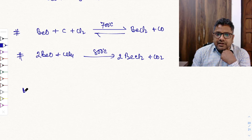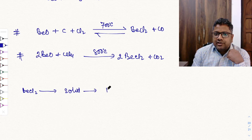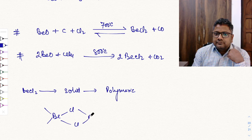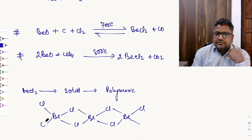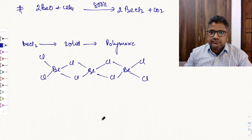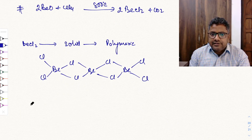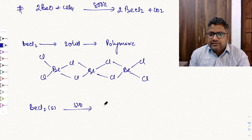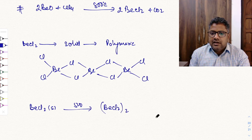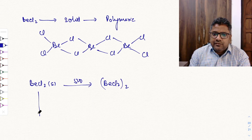Beryllium chloride in the solid phase exists as a polymeric chain. In the gaseous phase, when you heat BeCl2 solid up to 500°C, you get the BeCl2 dimer. If you heat above 1200°C, you get BeCl2 as a monomer. So at low temperature it is a polymer (solid), at 500°C it is a dimer, and above 1200°C it is a monomer.